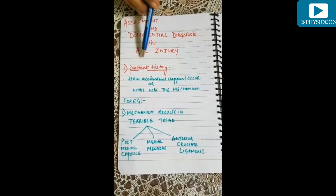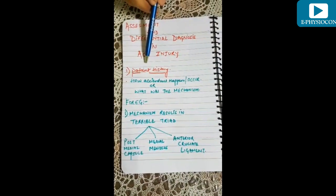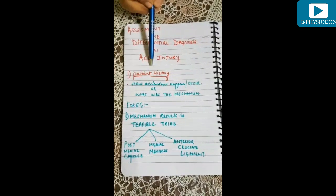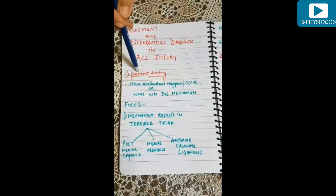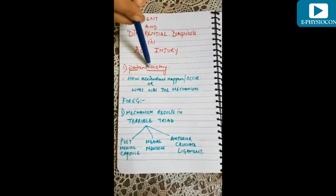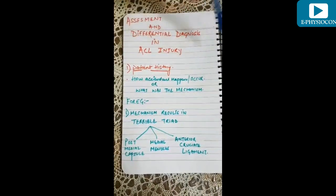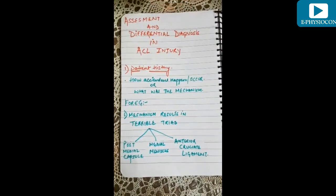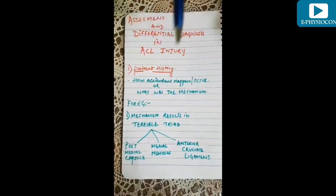First, we will go with the part of assessment, in which the first point is patient history — it is a very important element in the entire treatment. The first question asked is how the injury occurred, or what was the mechanism of injury.